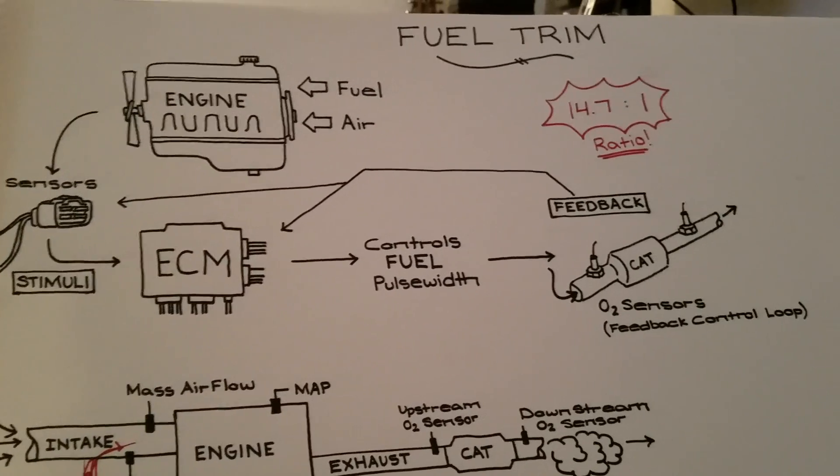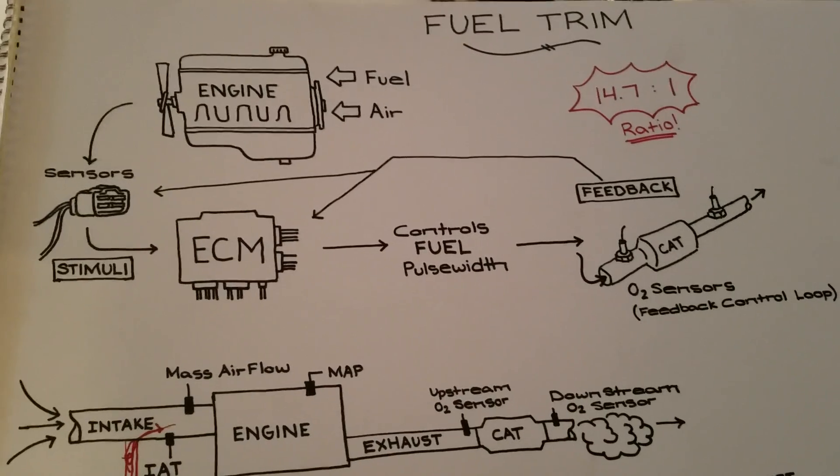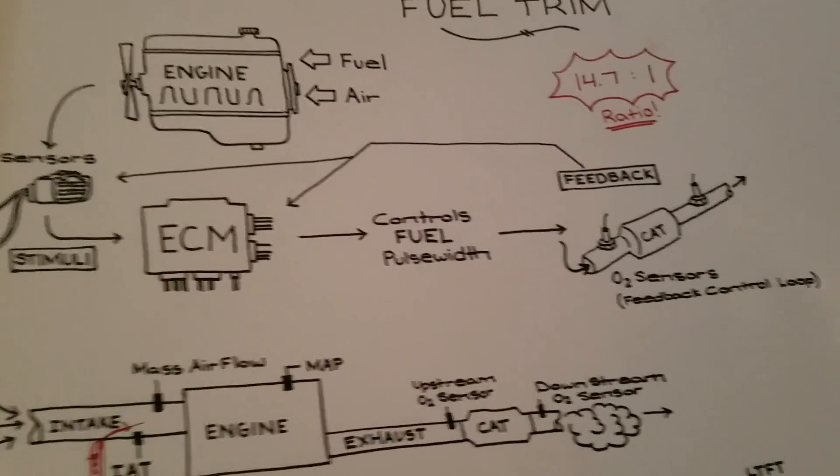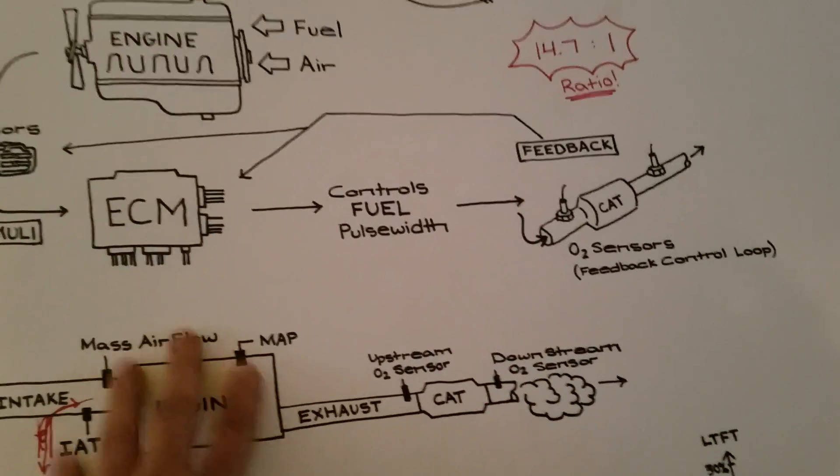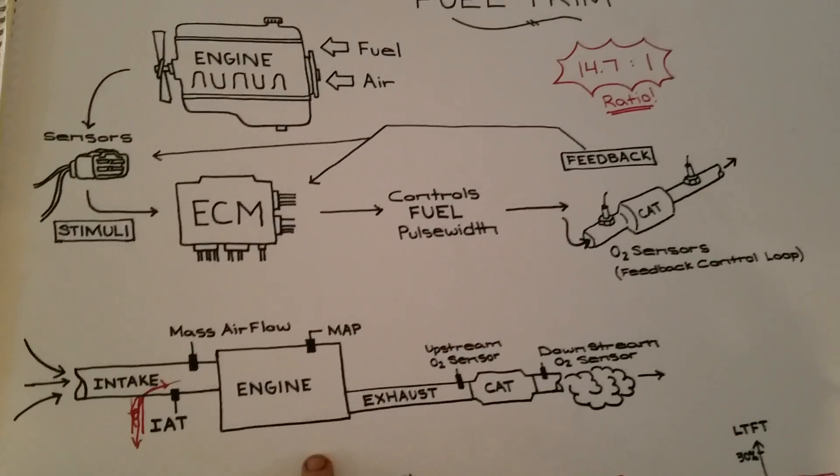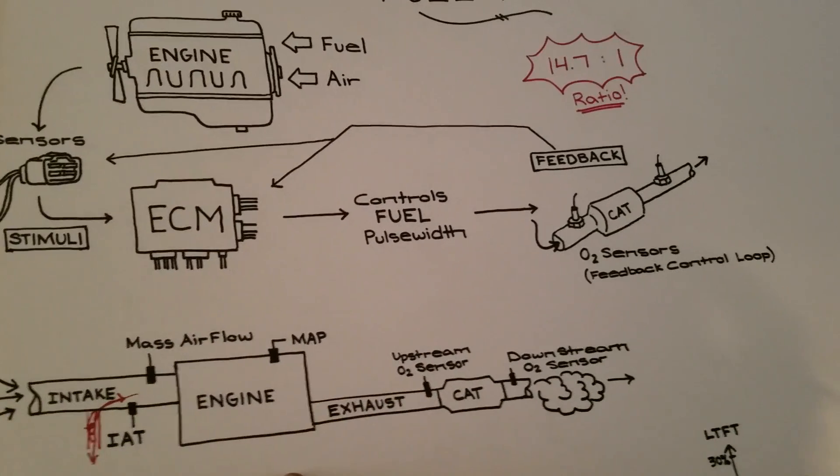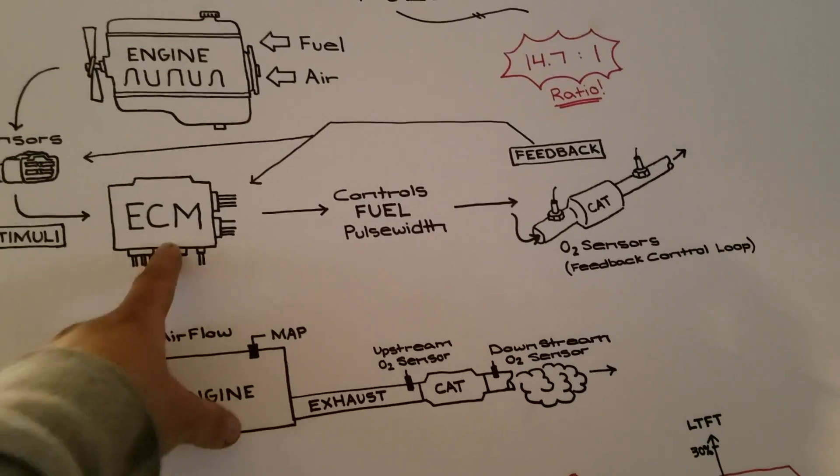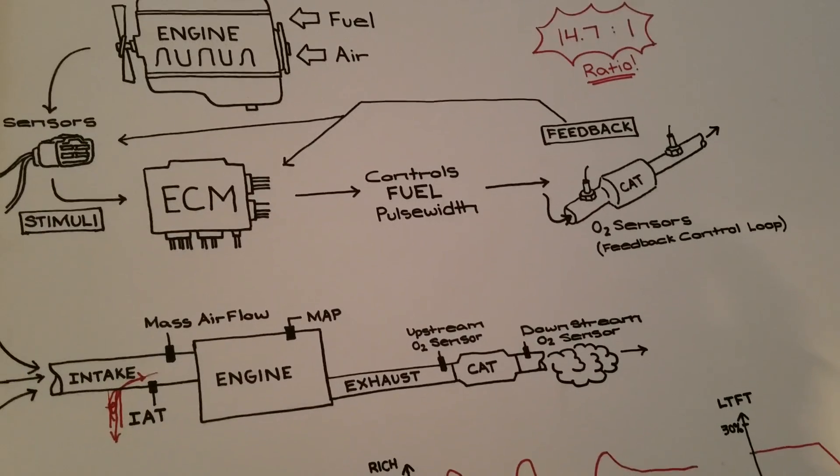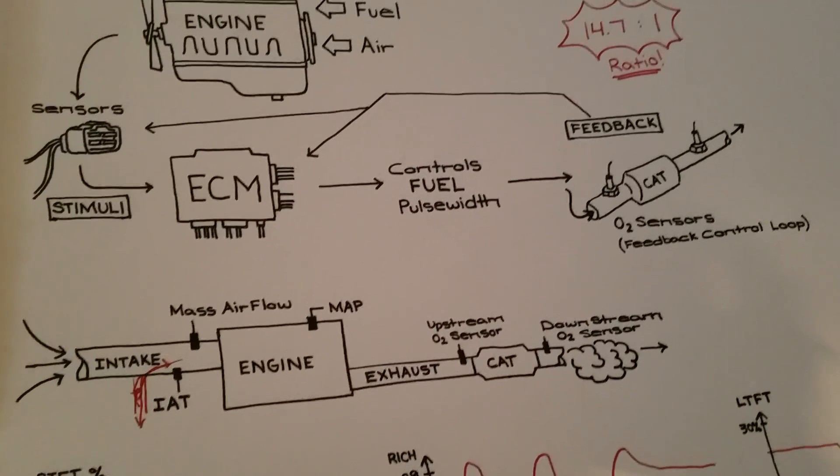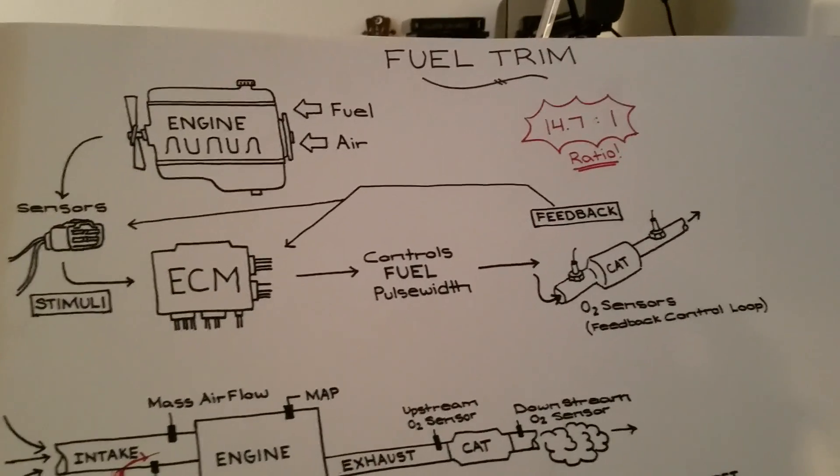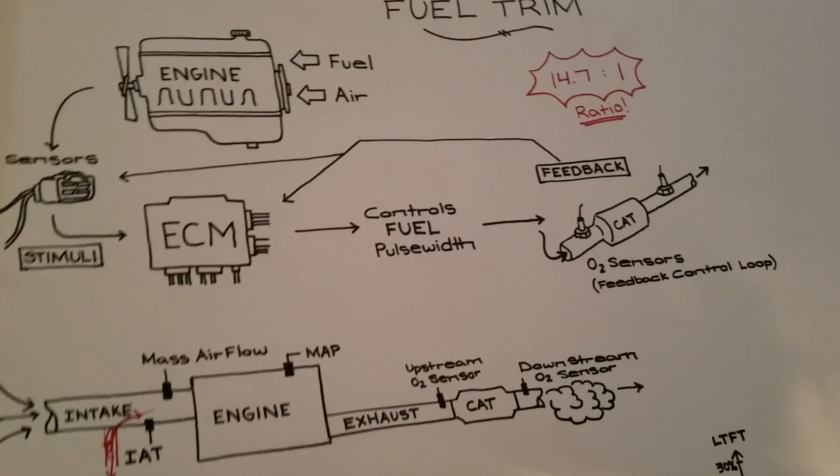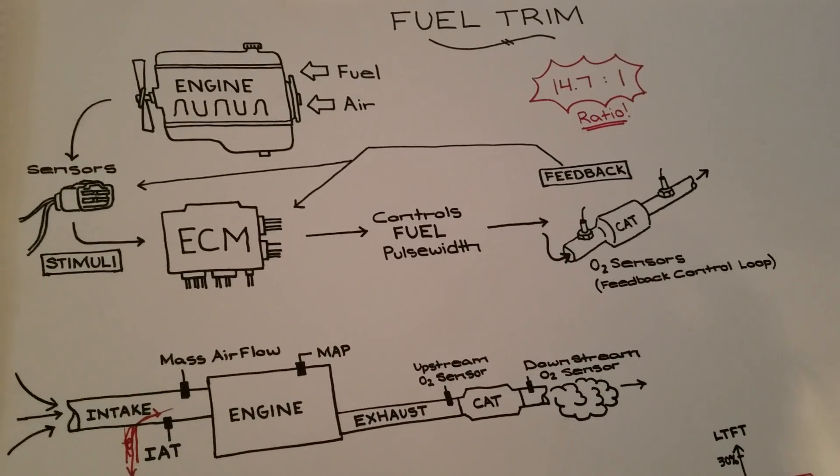Fuel trim obviously can tell you a lot. It's very good to understand how a feedback control loop works. Keep in mind, this loop is only working when the engine is in its closed circuit, meaning the engine is up to operating temp. It is no longer going off its pre-programmed values in the ECM, and it's receiving that live data from the sensors. I hope you guys enjoyed the video. If you have any questions, don't be afraid to ask, and thanks for watchin'.